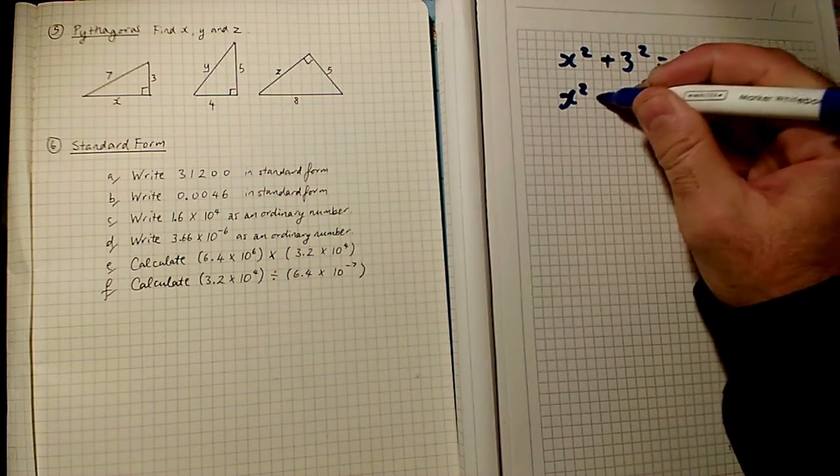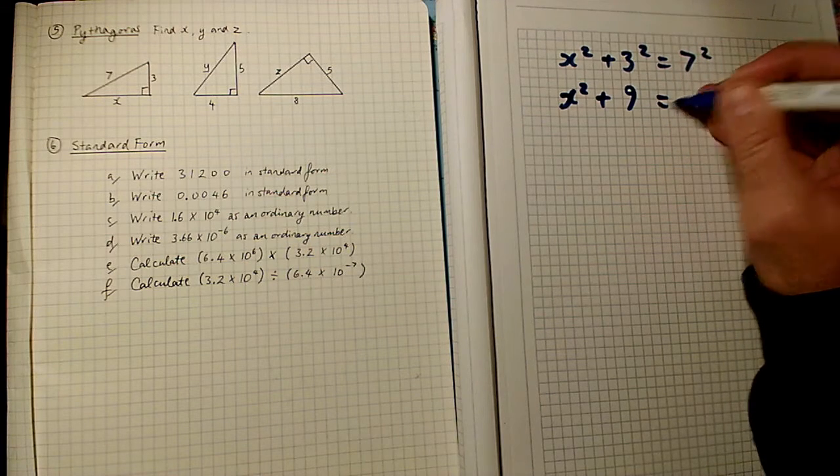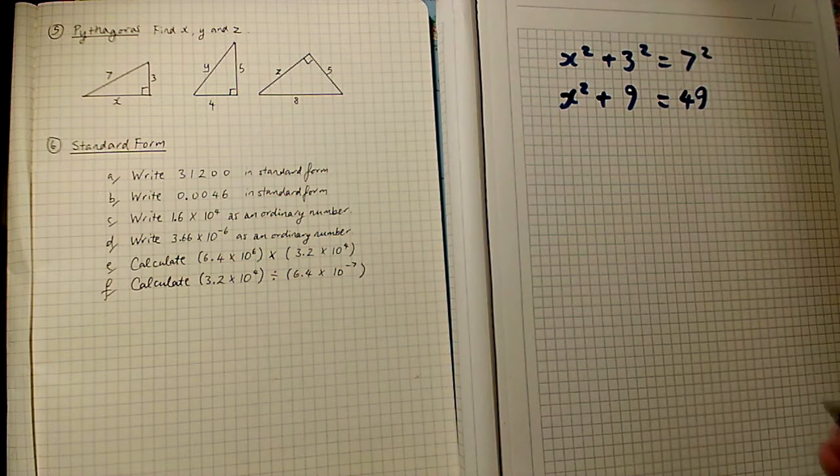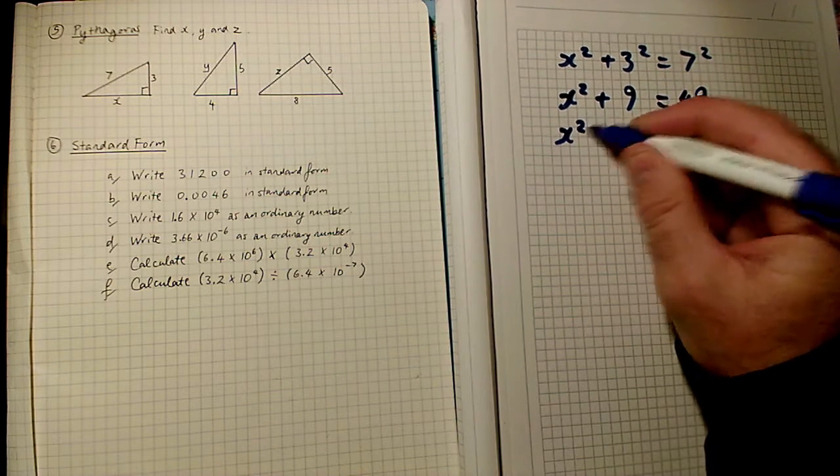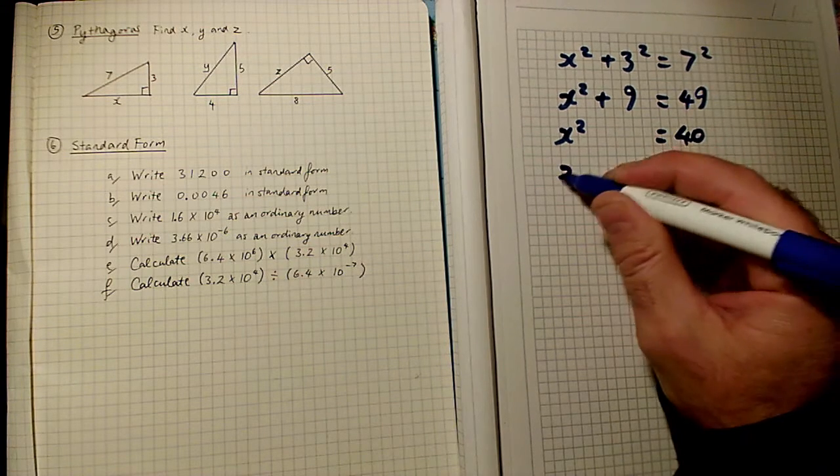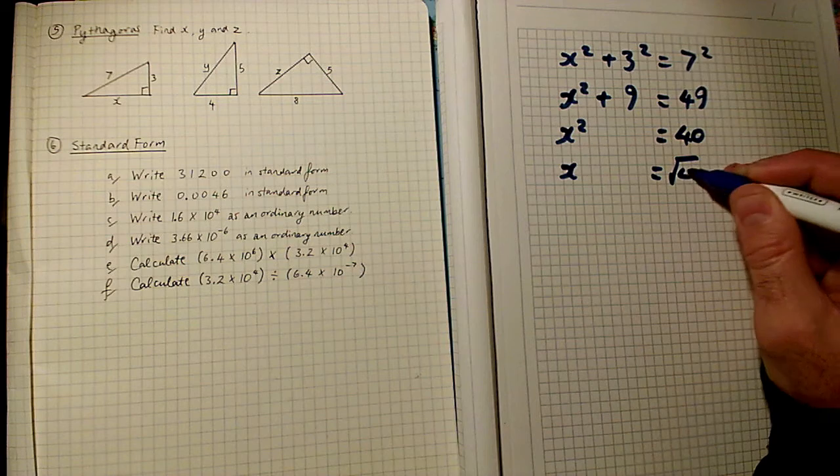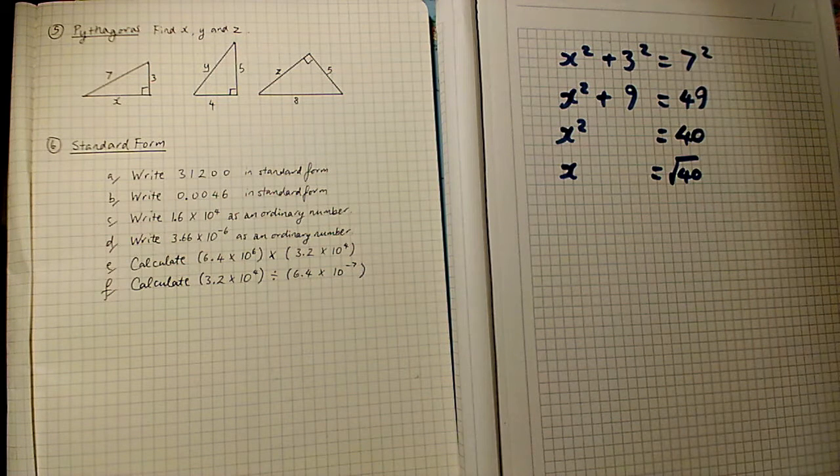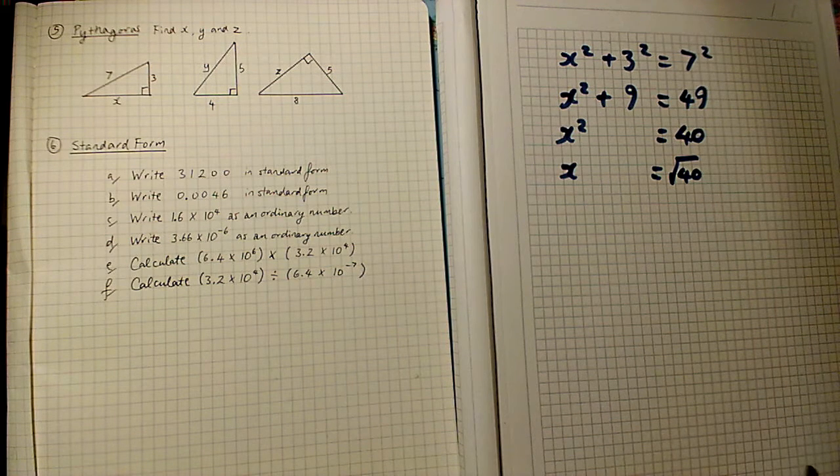That boils down to x squared plus 9 equals 49. Taking away 9 from both sides to get the x bit on its own, x squared equals 40. So x would be the square root of 40, which you can do on your calculator, is 6 point something.